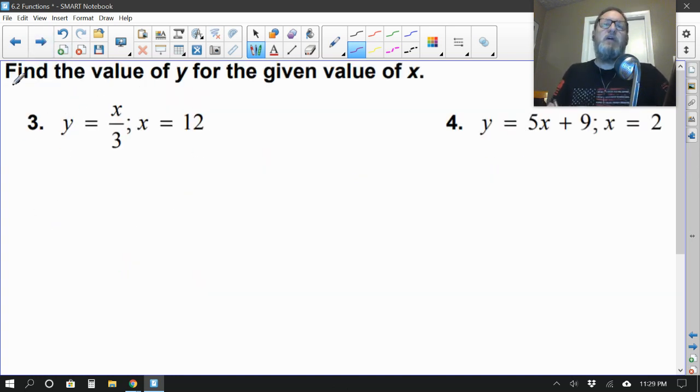All right, so here's another one. Find the value of y for the given value of x. We already saw an example of that, so let's just go for this one. All right, so they give us this equation here, y equals x over 3. Now, that looks like a fraction, and fractions are actually division problems. So let's see. What should x equal? Here it is 12. So all we have to really do is replace our x value with a 12. Do you see what I mean? Here, let me write that for you. So y equals, instead of x, x is 12. So 12 over 3.